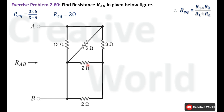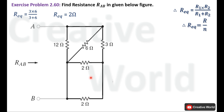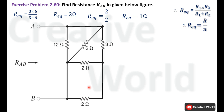Now these two resistances are in parallel and both have the same value. We use the formula R equivalent equals R divided by N, where R is the value of a single resistance and N is the number of identical resistances connected in parallel. In this case R is 2 ohm and N is 2, so R equivalent becomes 1 ohm. We replace these two resistances with a single resistance of 1 ohm.